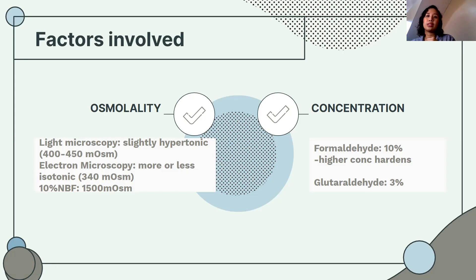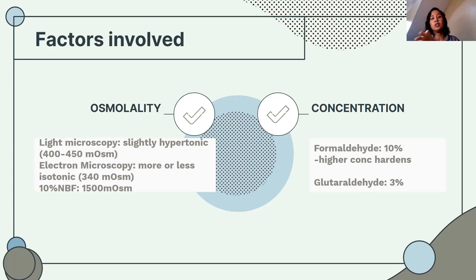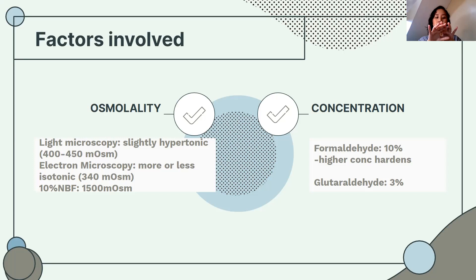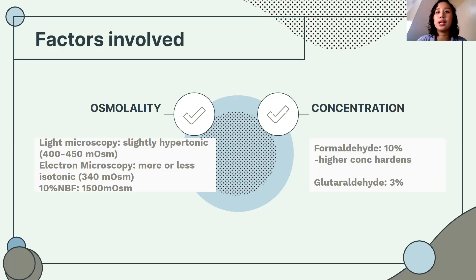The correct concentration of formaldehyde used in the laboratory is 10%. The stock solution available is 37% to 40%, and it is your responsibility to dilute it to 10%. If it's more than 10%, the tissue will harden on the outside and formalin cannot penetrate the center. For glutaraldehyde, the concentration should be only 3%.